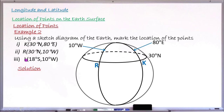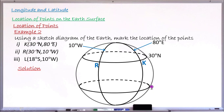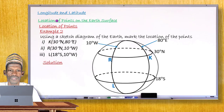Next is point L, which is on latitude 18 degrees south and longitude 10 degrees west. The southern direction is below the equator, so I draw latitude 18 degrees south below the middle. I already have longitude 10 degrees west. Where these two lines cross is the position of point L. I mark that point as L, on latitude 18 degrees south and longitude 10 degrees west.